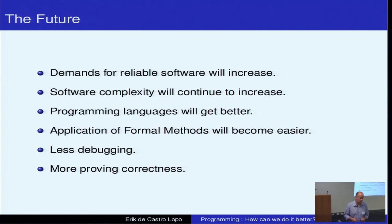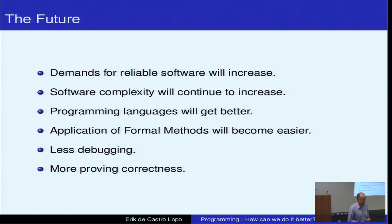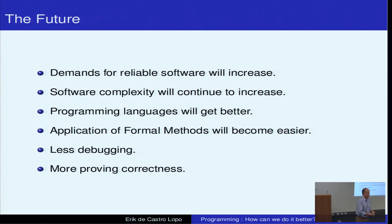I think most importantly the groundbreaking work on things like L4 verified and theorem provers means that those formal methods will become easier and more automated. What's happened with the L4 project is they've built up effectively a library of proof routines, so that the next time they need to formally verify something, they can use large chunks of that existing work. There will be libraries of proofs for verifying things. And I think the emphasis will move away from debugging towards proving correctness.